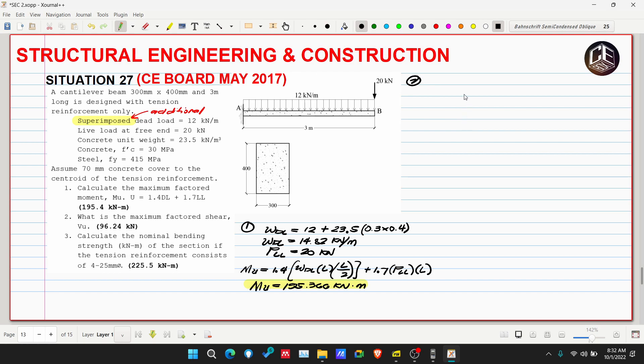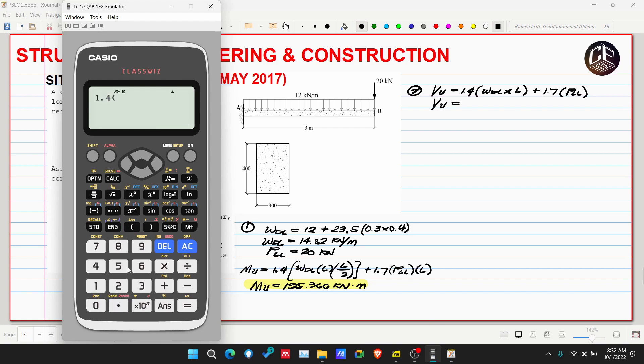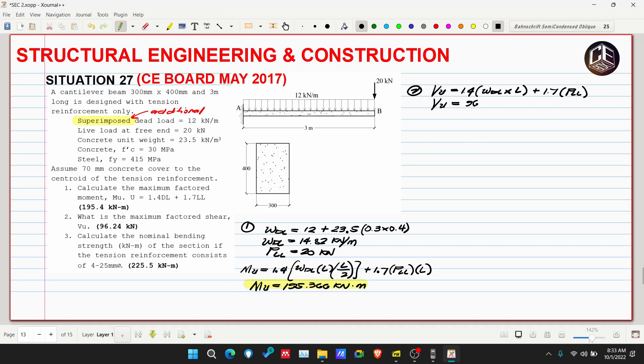Number 2: What is the maximum factored shear Vu? Where do we get the maximum shear? Here at A. So Vu is equivalent to 1.4 multiplied by WDL multiplied by L plus 1.7 multiplied by PLL. This gives us the maximum factored shear: 1.4 multiplied by 14.82 multiplied by 3 plus 1.7 multiplied by 20, so 96.244 kilonewtons.